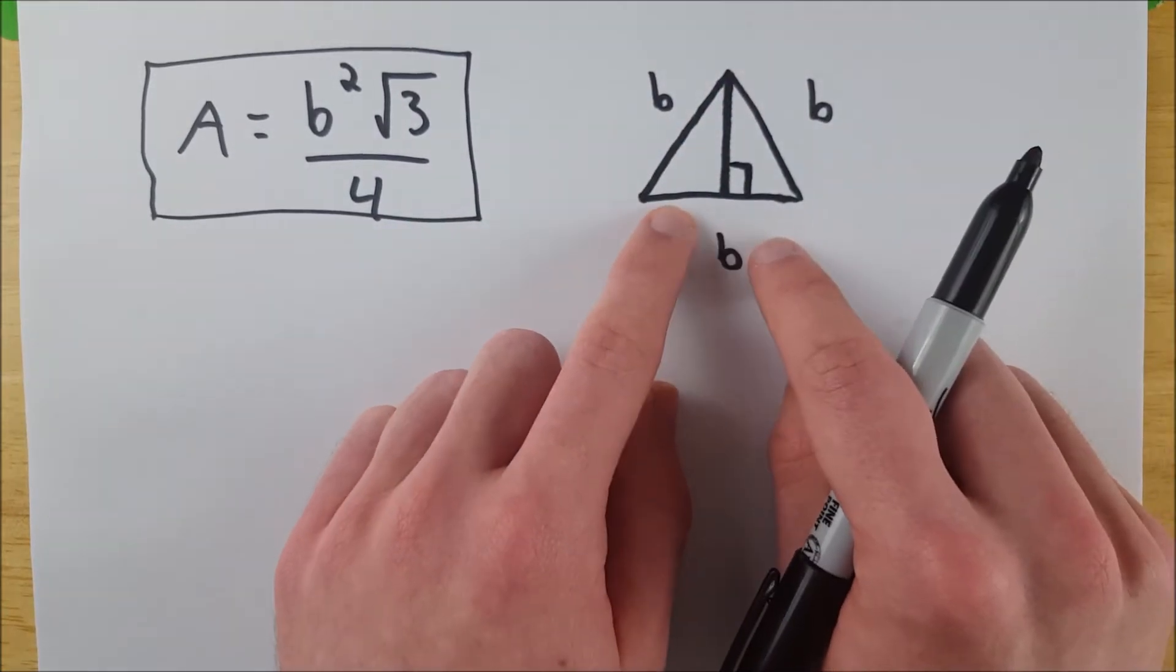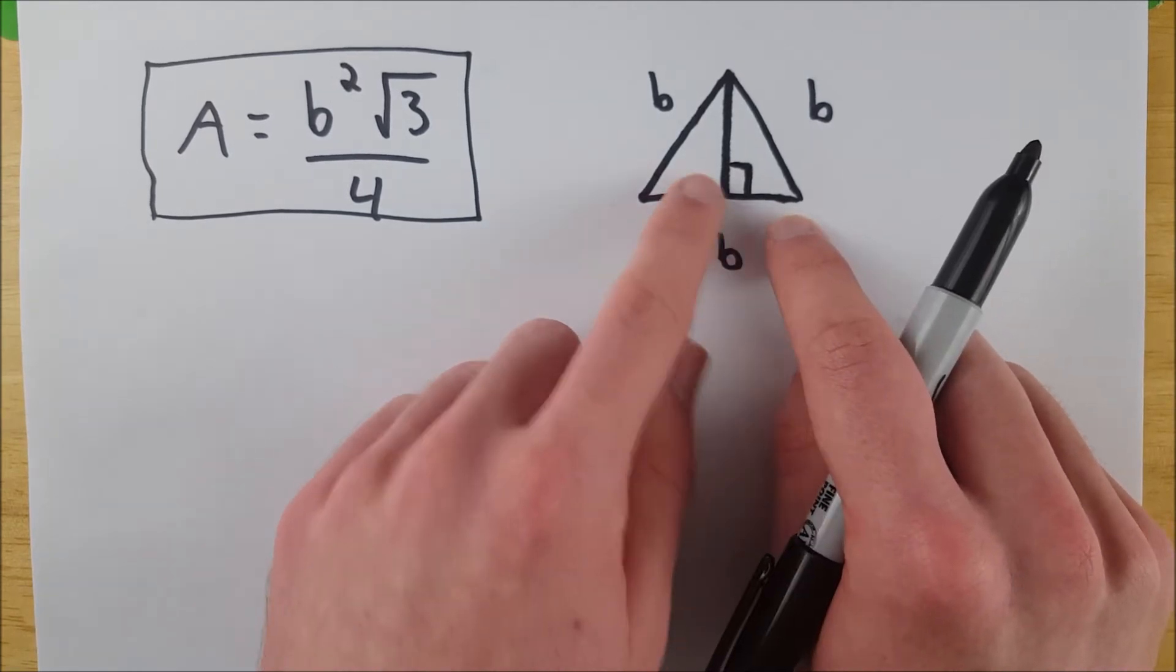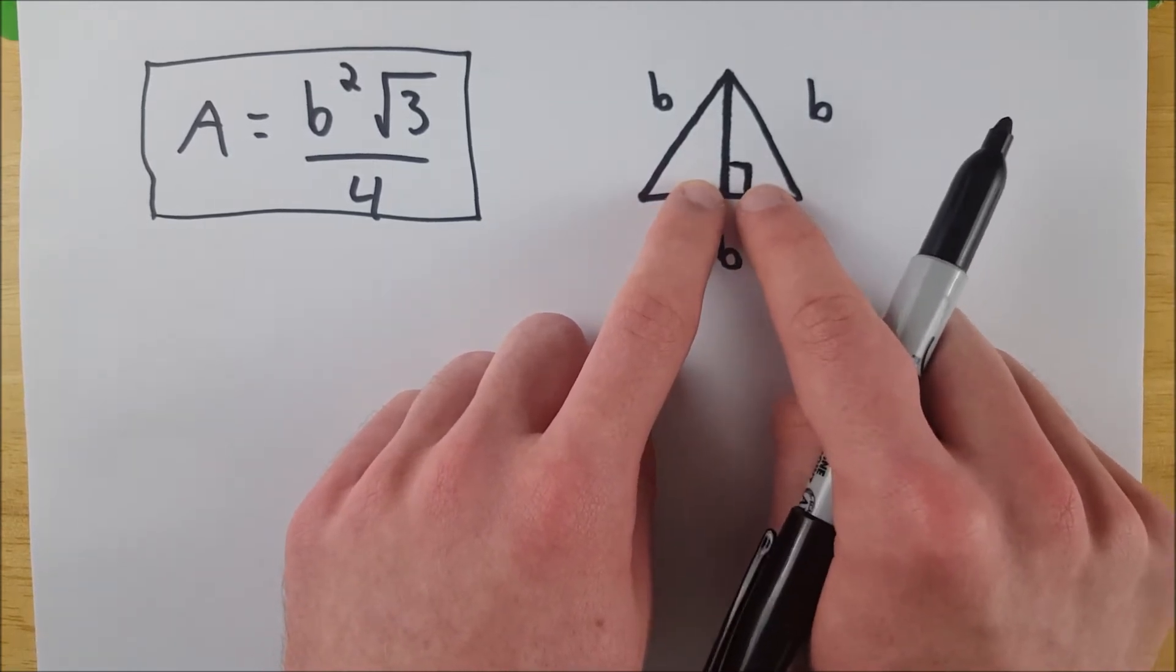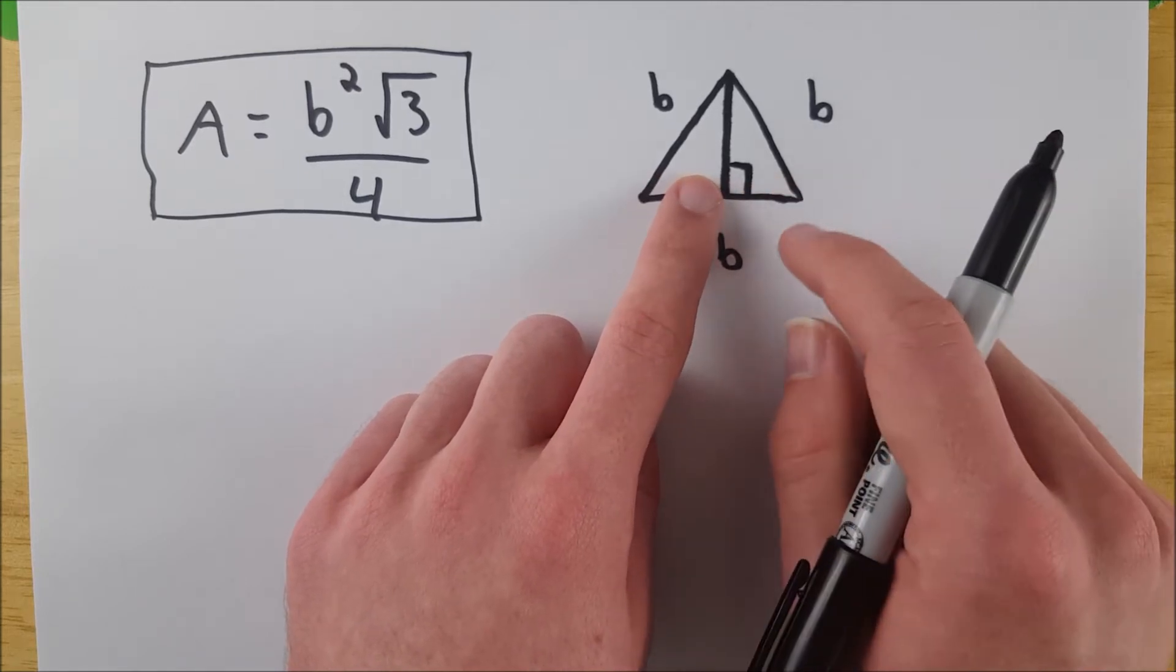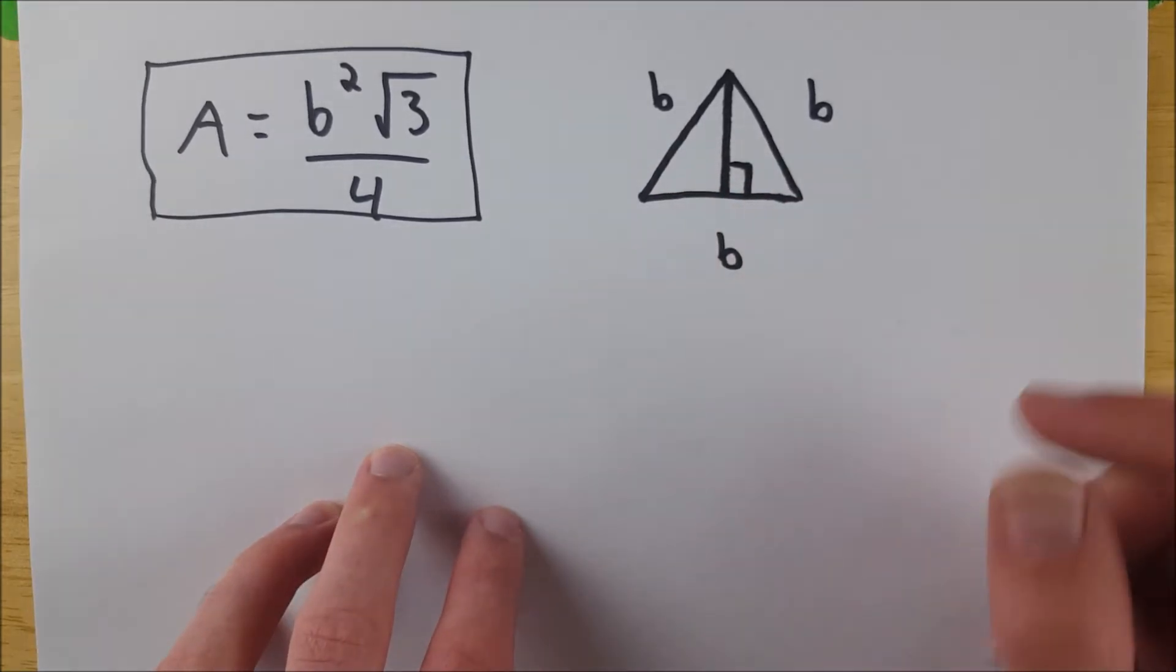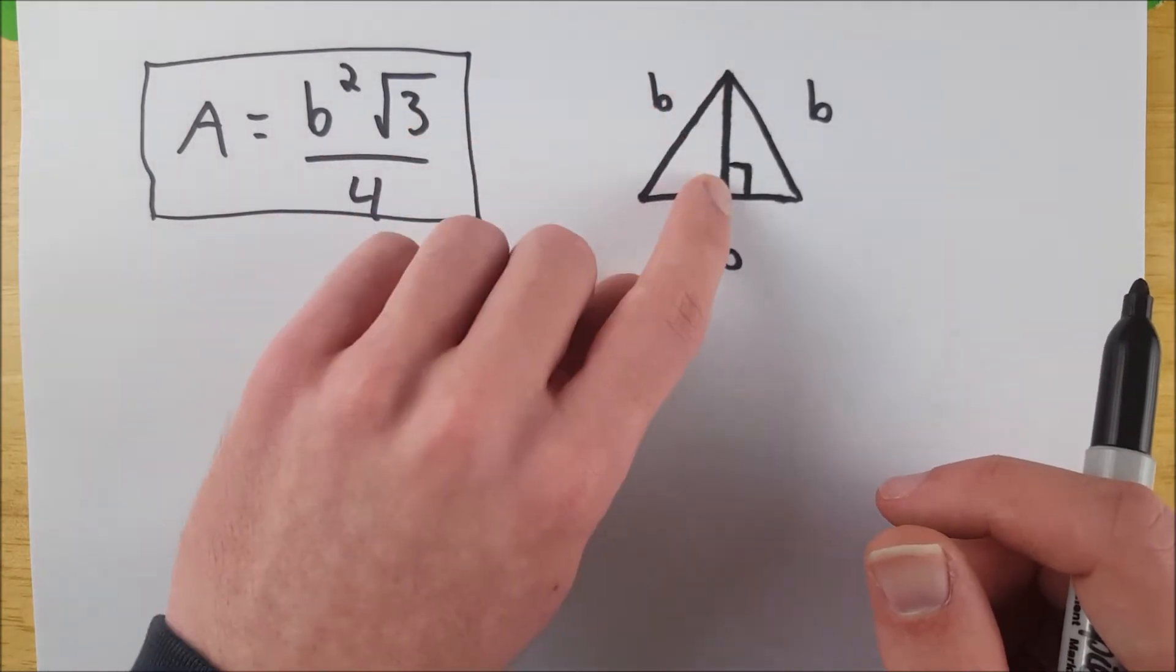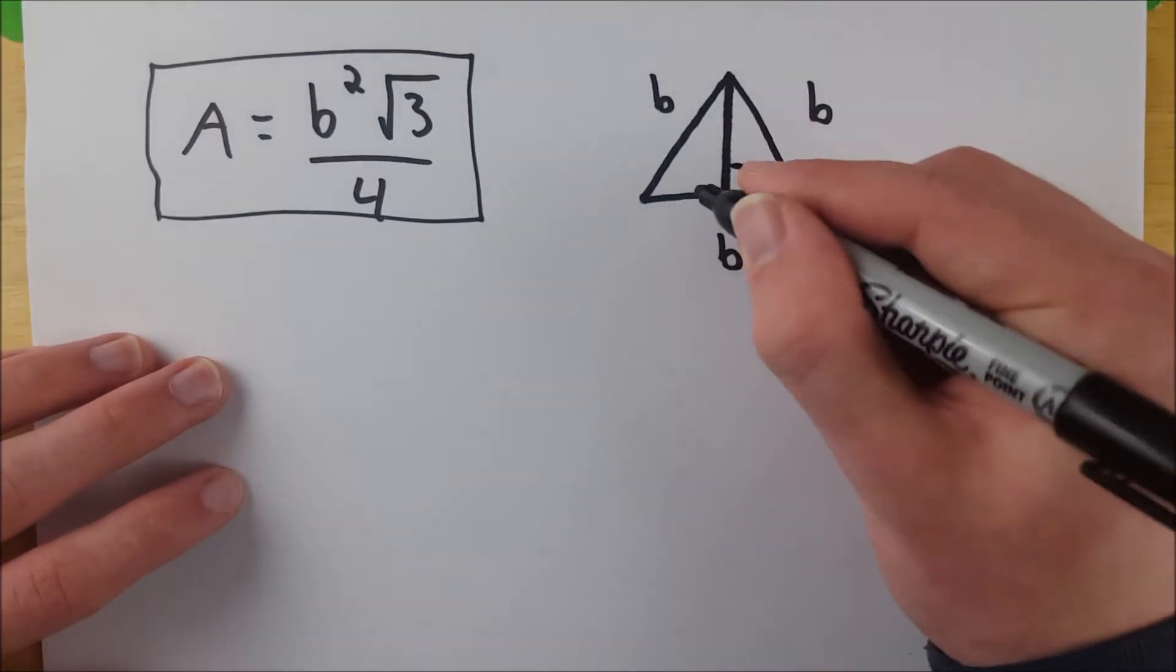Therefore, this side has to be equal to this side, and this angle has to be congruent to this angle. Since they're supplementary angles, they both have to be 90 degrees because they're congruent supplementary angles. Therefore, we know that this is a perpendicular bisector. So that's easy.